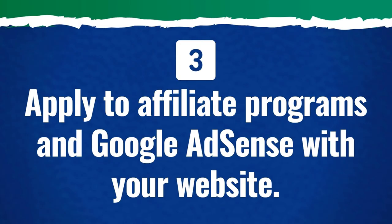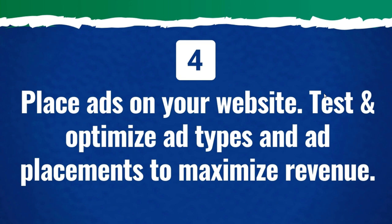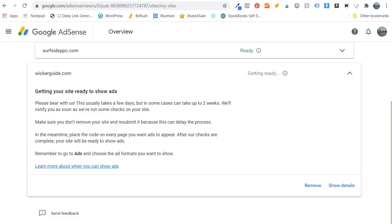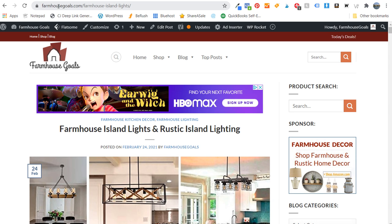Step number four is to place ads on your website — test and optimize ad types and ad placements to maximize revenue. There is no one way to put advertisements on your website; there's a variety of strategies. Ultimately you want to test to see what drives the best revenue for your website. I'm going to use farmhouse goals as an example, since I just applied to Google AdSense and the Wayfair affiliate program with wickerguide. The plugin I use through WordPress is Ad Inserter — it has ad manager and AdSense ads capabilities. I highly recommend using it if you're having trouble placing your ad code on your website.